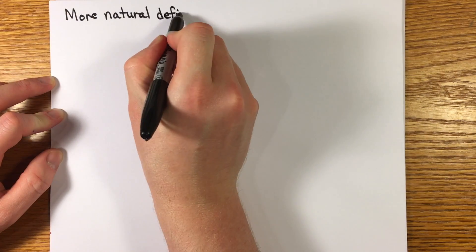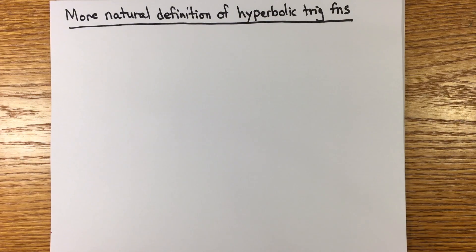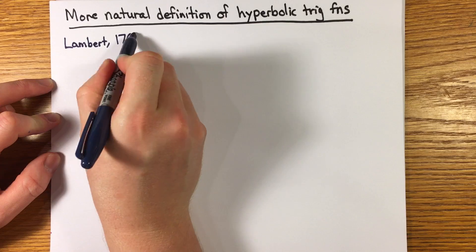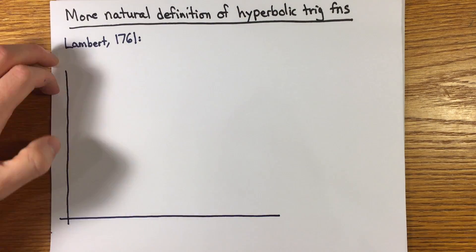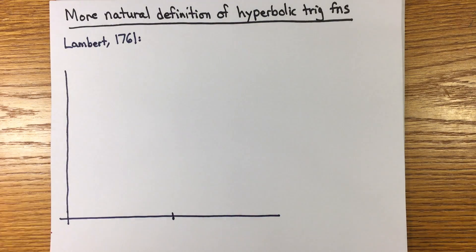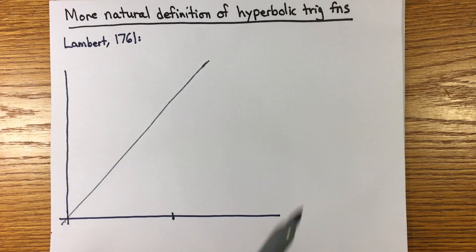So here's the natural definition of the hyperbolic trig functions and the diagram from Lambert's paper of 1761. Recall that cosine and sine parameterize the unit circle by arc length and also by half the area of the subtended sector. This was the subject of the first three episodes of this series. You should check them out.